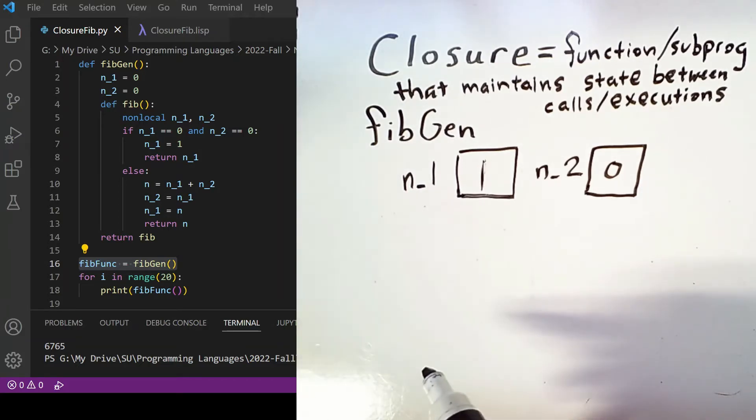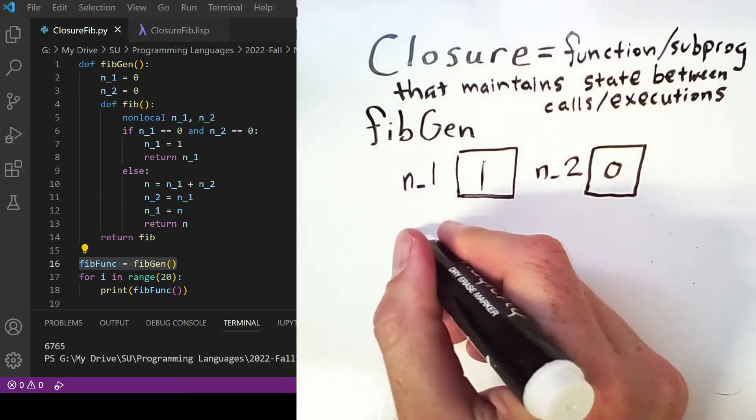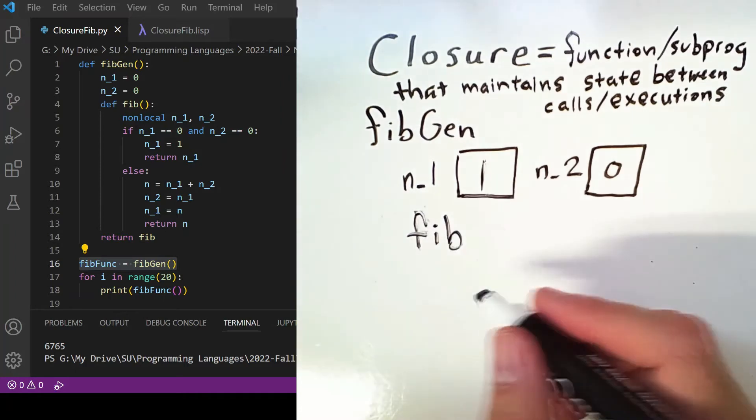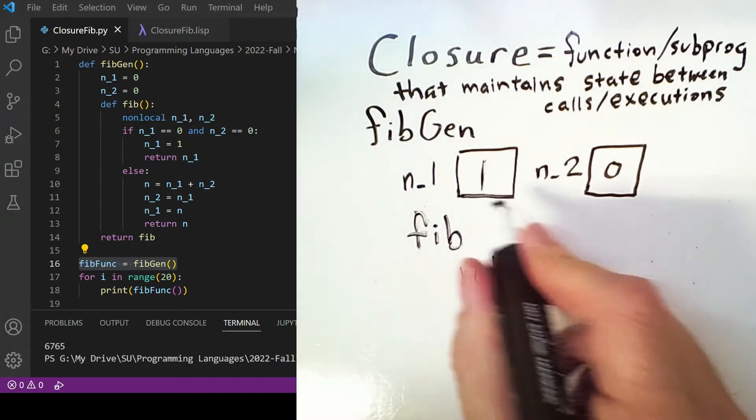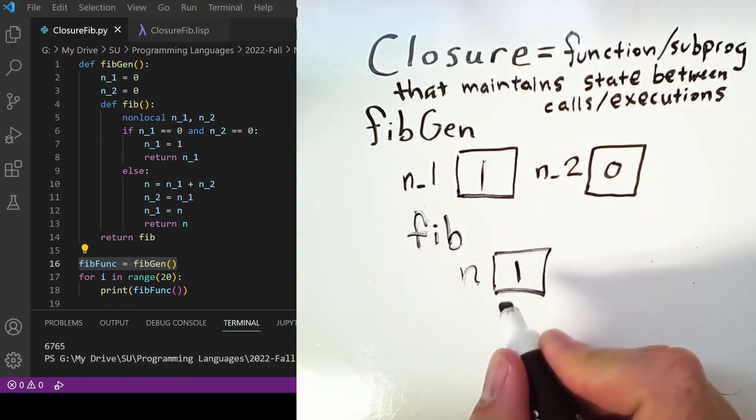So now the first case of that if-else is not true; we instead go to the else case inside of fib. And we'll define a local variable n that equals the sum of those two numbers, which is one.